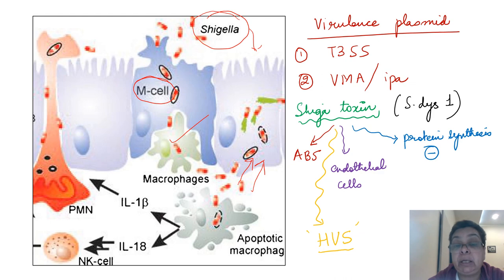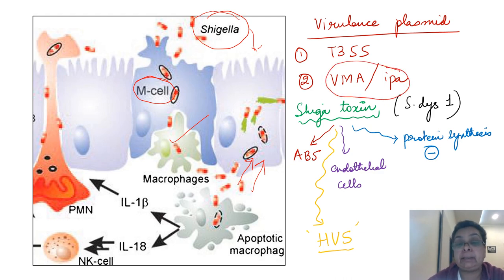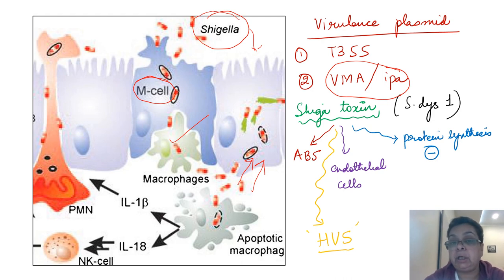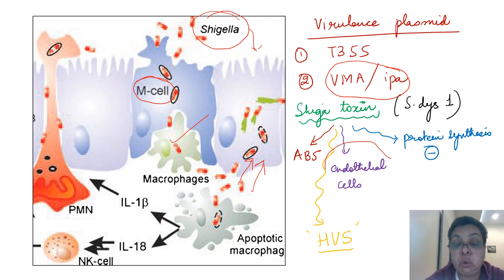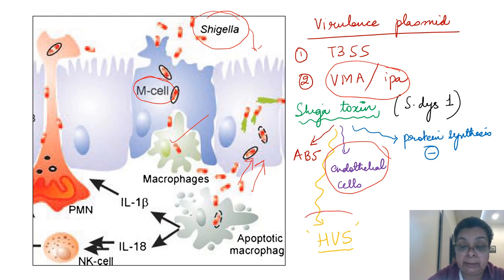Here Shigella induces apoptosis of the macrophages and then invades from the basolateral aspect. Using the Type 3 Secretion System, it pumps in EPOP proteins, as a result of which microspikes form and the bacterium is taken up intracellularly. Shigella provokes its own endocytosis by pumping those EPOP proteins into the mucosal cells. One serotype — Shigella dysenteriae type 1 — produces the Shiga toxin, which is an AB5-subunit toxin. This toxin inhibits protein synthesis by cleaving the 60S ribosome; its site of action is the endothelial cells, and when it disseminates to the glomerulus, it precipitates hemolytic uremic syndrome.